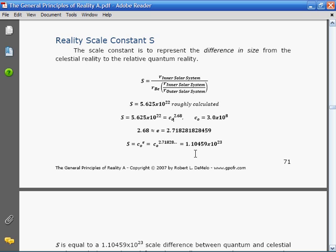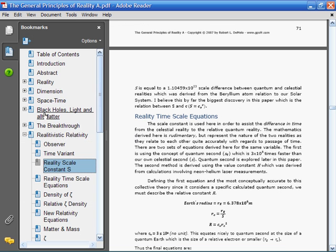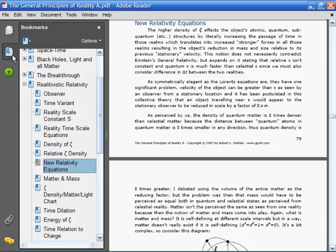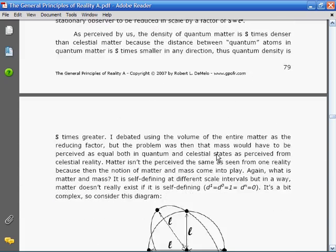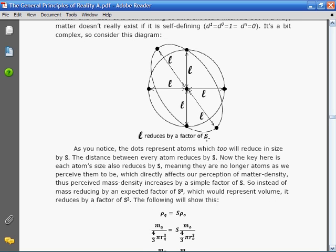Based on this, I was able to derive several equations. The first equation, which was hugely significant, was the mass density equation. This density equation would eventually give rise to a mass equation. Basically, density was how far apart atoms were in an object of matter. At the quantum scale, a similar object would be S times closer, these atoms would be S times closer to each other. Therefore, the density equation was quantum density equals S times celestial density.